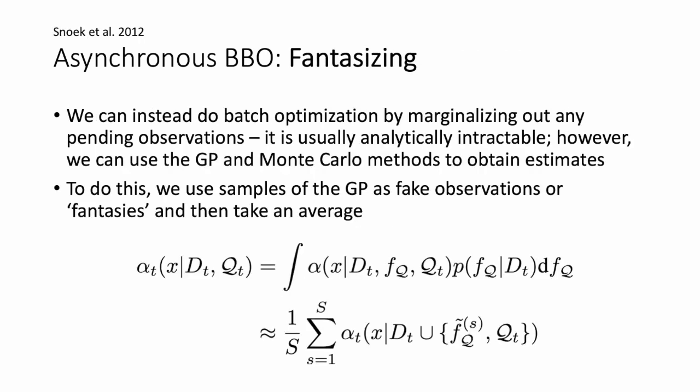The second asynchronous batch method is fantasizing. The idea is that ideally we would marginalize out pending observations using an integral, however this is commonly intractable. Since we have a Gaussian process, we can take samples from it and use them as fake observations — or fantasies — then take an average to approximate the intractable integral. This approach can be used with any acquisition function.